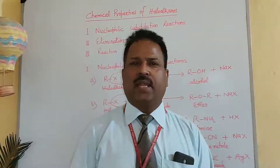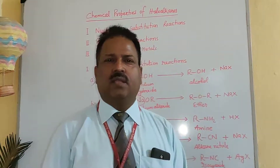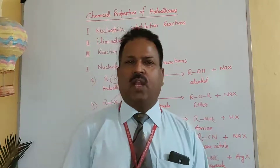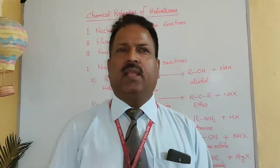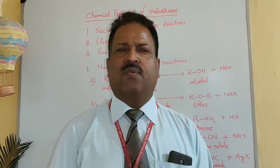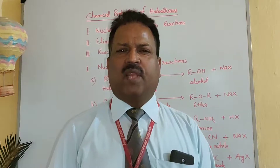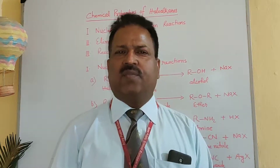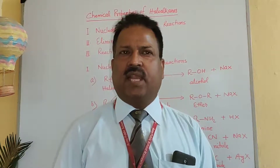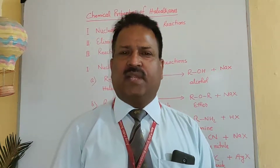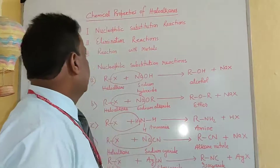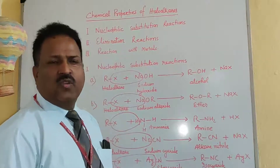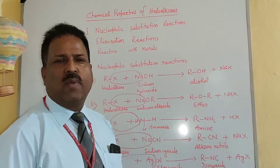Category B is chemical properties of haloalkanes. Haloalkanes mainly give three types of chemical reactions: first, nucleophilic substitution reaction; second, reaction with metals; and third, elimination reaction. We will look at the details of each one by one.